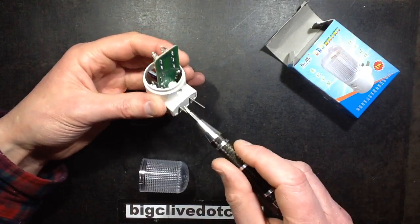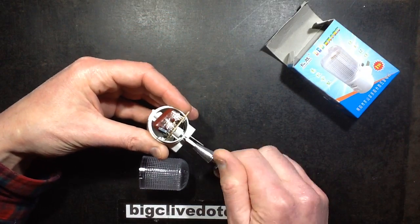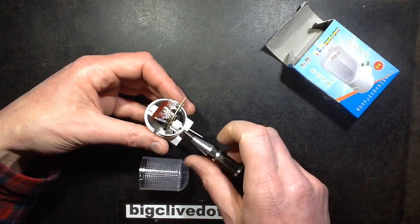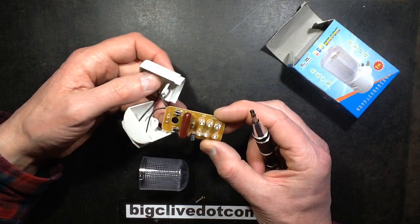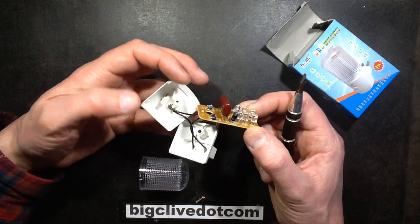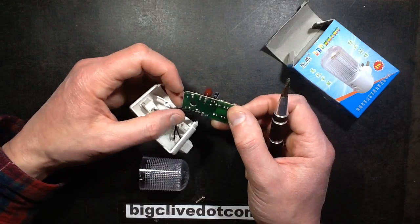Well apart from the fact the cover just kind of falls off. Perfect for use in children's nurseries then. Oh very, very typical circuitry. The mains is switched through the switch, which you'd kind of expect.